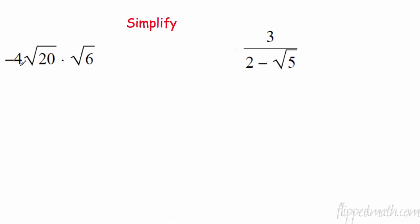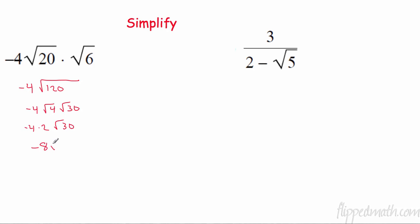To simplify: negative 4 is on the outside, so 20 times 6 is 120 inside the radical. I need to find a perfect square factor of 120 — that's 4, so 4 times 30. The square root of 4 is 2, so we get negative 4 times 2 radical 30. Negative 4 times 2 is negative 8 radical 30. There are no perfect squares in 30, so it stays inside.